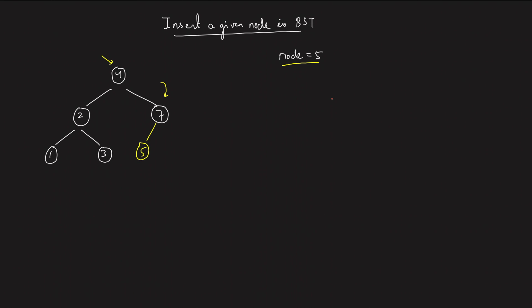Let's try with another value — zero. Start at the root: zero should be on the left. Move to two: zero should be on the left. Move to one: zero should be on the left — that position doesn't exist, so insert zero there. Similarly for nine: start at the root, nine should be on the right, move to seven, nine should be on the right — nothing there, so insert nine. Simple!